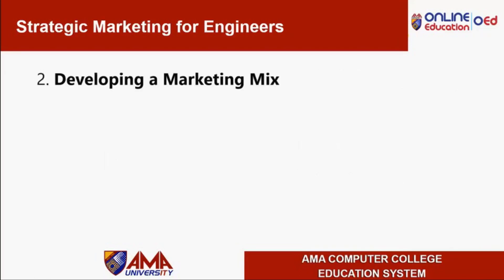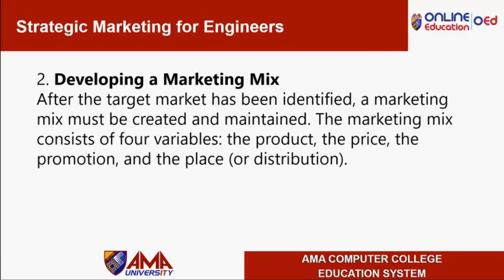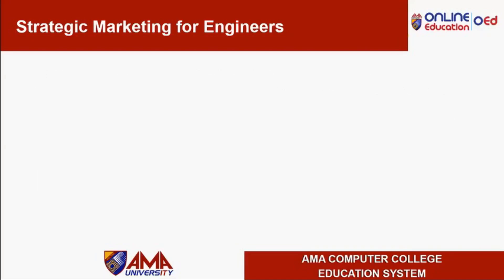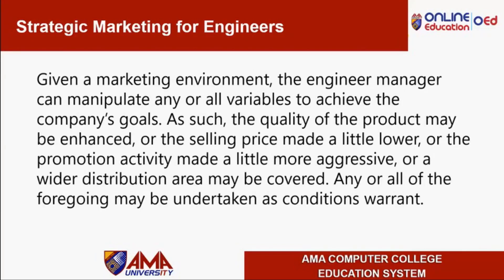And of course, we have developing a marketing mix. After the target market has been identified, a marketing mix must be created and maintained. The marketing mix consists of four variables: the product, the price, the promotion, and the place or distribution. Given a marketing environment, the engineering manager can manipulate any or all variables to achieve the company's goals. As such, the quality of the product may be enhanced, or the selling price may be made a little lower, or the promotion activity made a little more aggressive, or a wider distribution area may be covered. Any or all of the foregoing may be undertaken as conditions warrant.